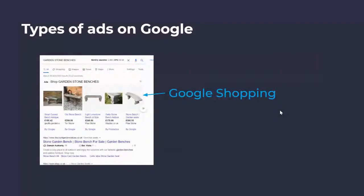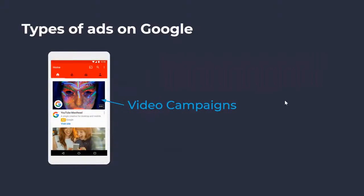Next we've got Google Shopping ads — you've probably seen these when you're searching for products online. There are a number of places these can appear, but most typically at the top of the Google search results pages and within the Google Shopping tab as well. And then finally YouTube ads. So these can take many formats and forms, but the one I've highlighted here is a YouTube masthead ad. This basically allows advertisers to showcase their brand within the YouTube home feed.